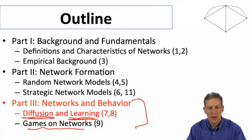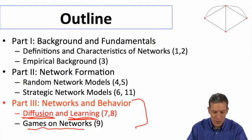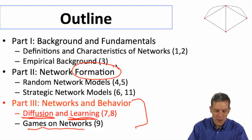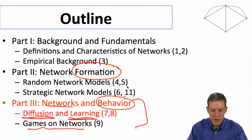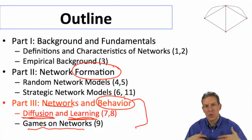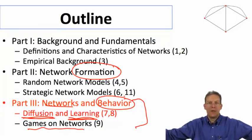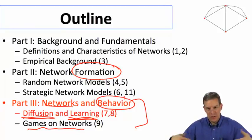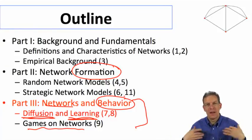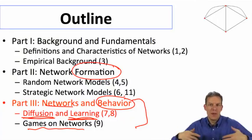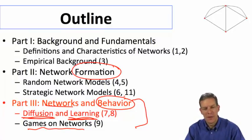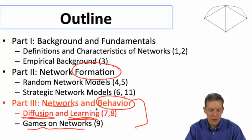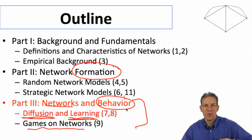We'll take those each in turn. One thing to emphasize is that earlier we looked at network formation, and here we're taking the networks as given and studying the behaviors. Obviously these things influence each other — what I expect to happen given a network will influence which links I form, and which links I form influence the behavior. These things are really co-determined or co-evolve, and yet we're going to take them one at a time.